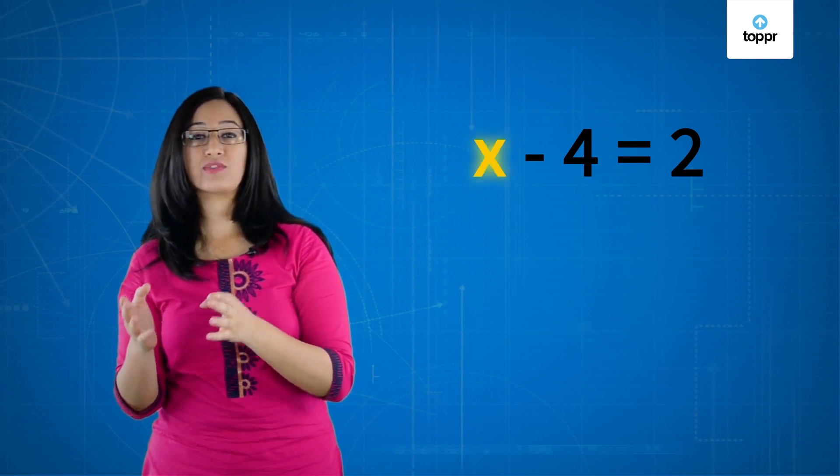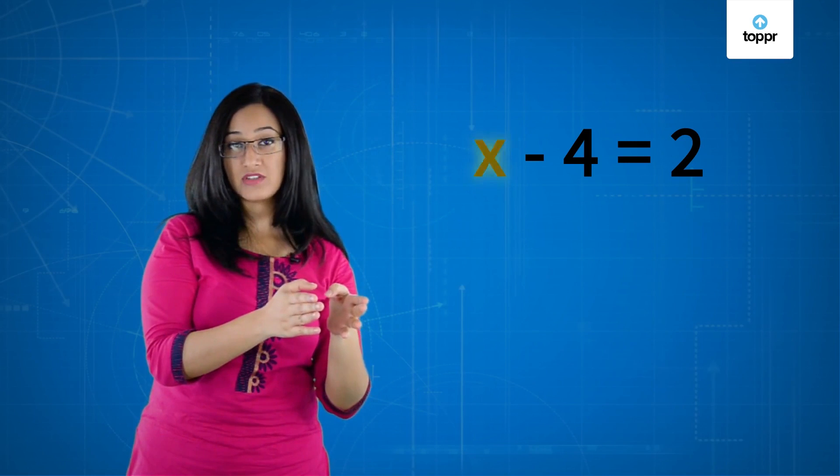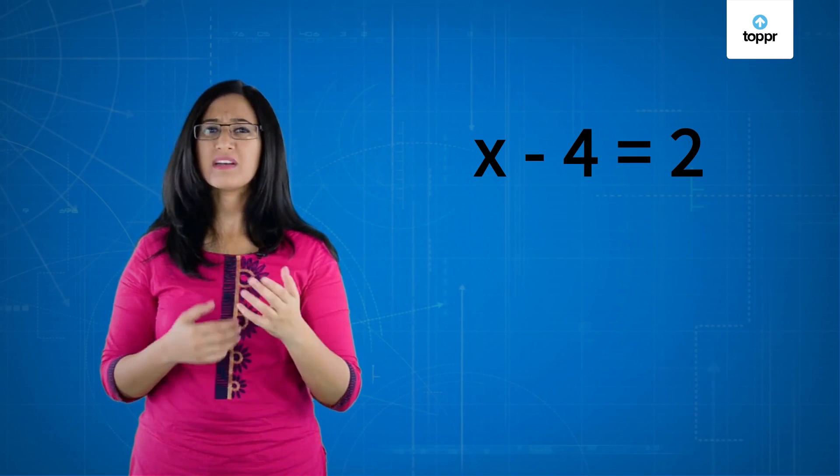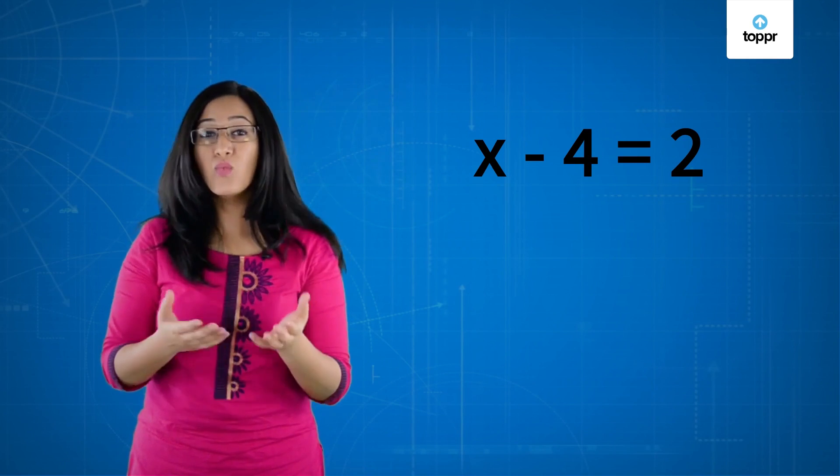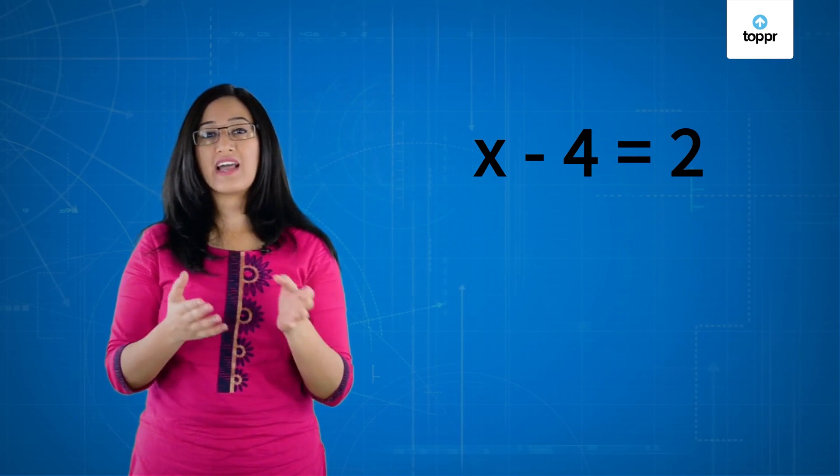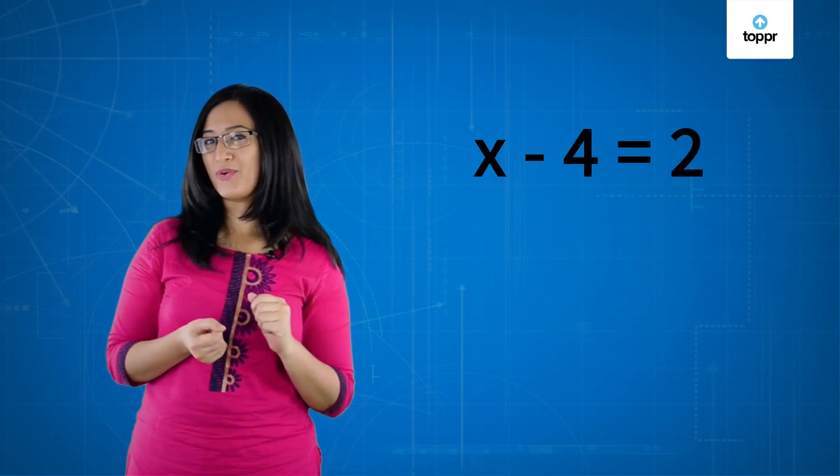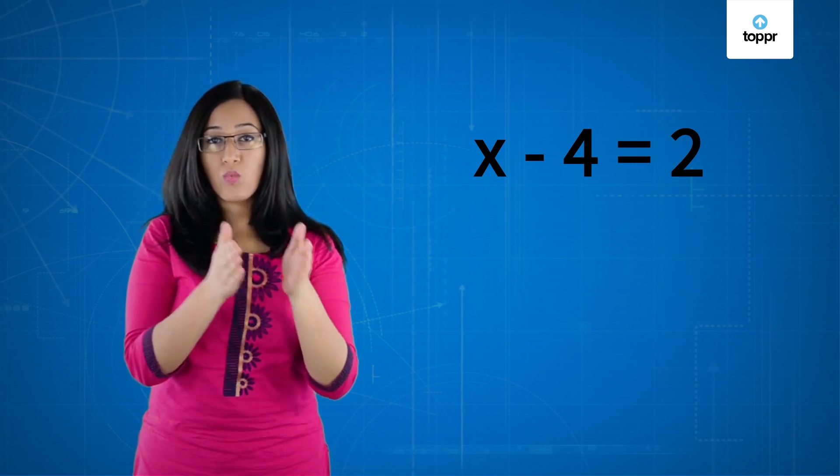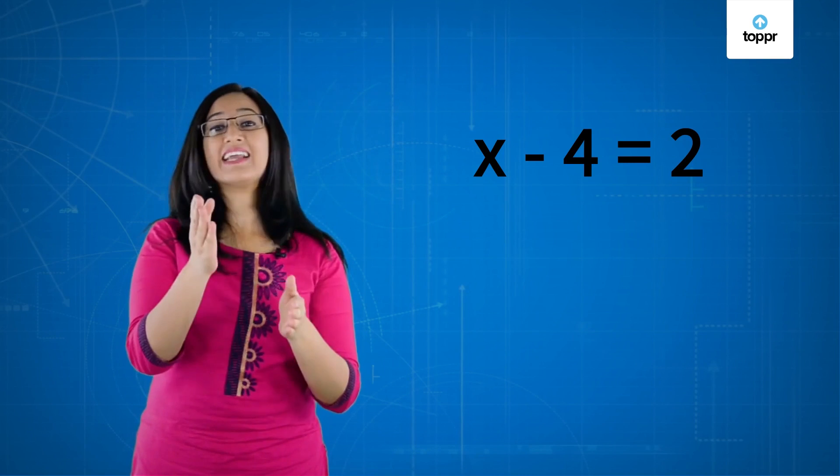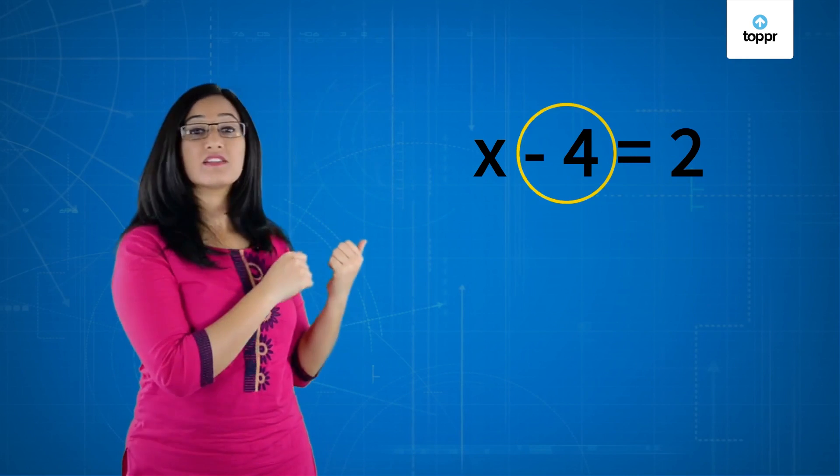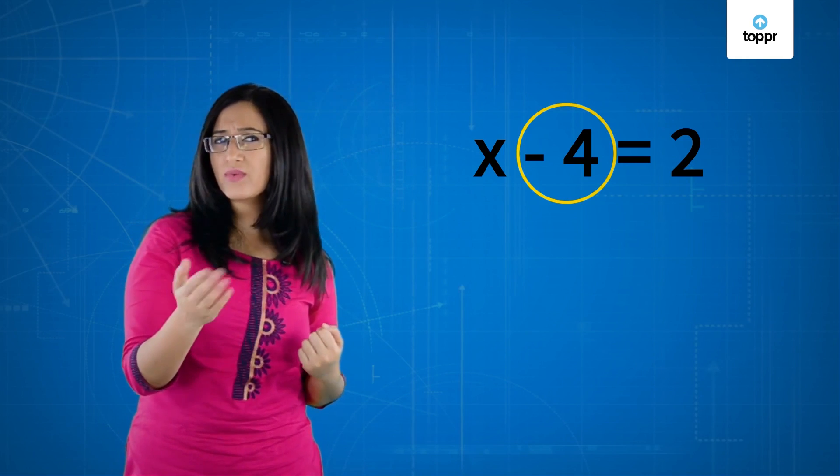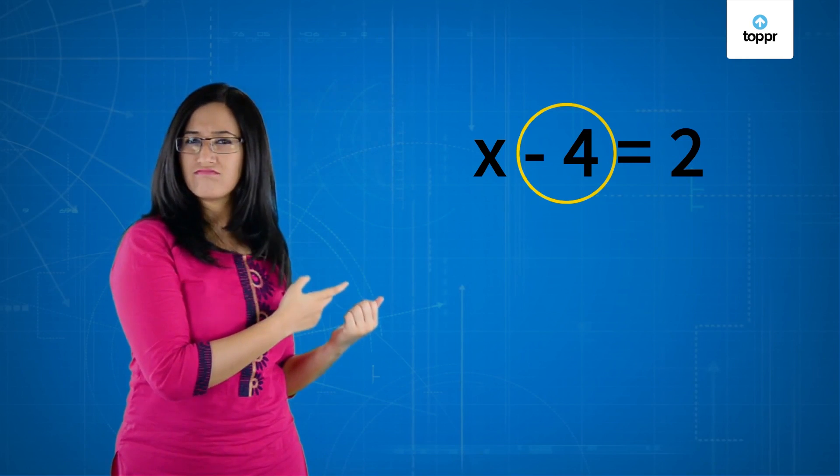So all the unknown values are placed on one side of the equation and the constants are placed on the other side. But how do we do this? Well, we can always use the help of our friends, the arithmetic operations. In order to keep only unknown values on one side of the equation, I need to get rid of the minus 4 on the left hand side of the equation. Can you think of a way we could remove the minus 4? Can't we just add a plus 4 to it?